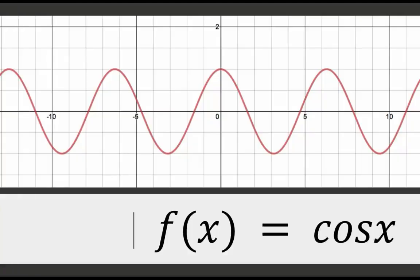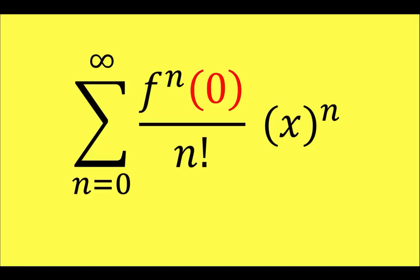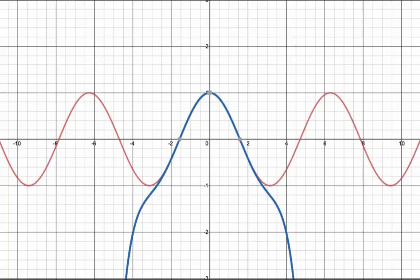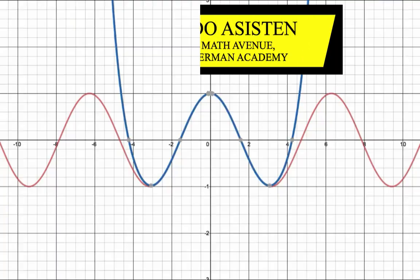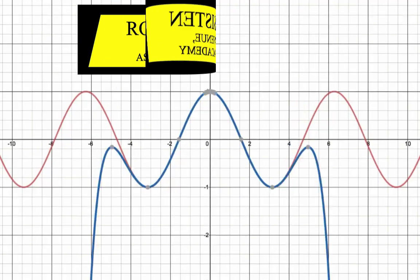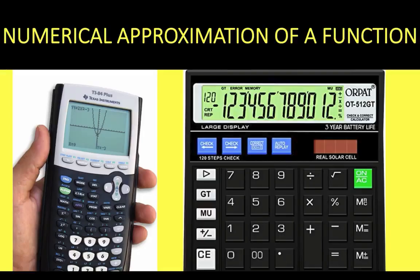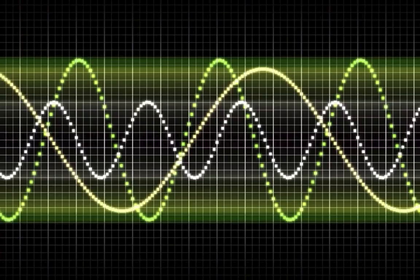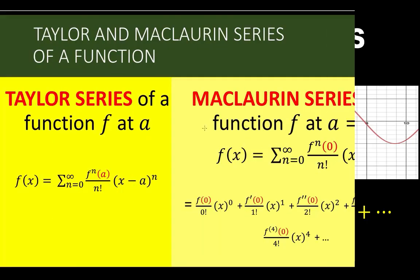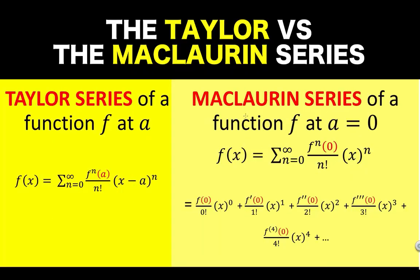This is the cosine function. Its graph is the cosine wave. And this is a series — a Maclaurin series. Do you know that this series allows one to create a polynomial function that matches the values of cosine x? And in many practical applications, it is a good numerical approximation of the function it represents? Let me show you how and why. This is about the Maclaurin series of the cosine function.